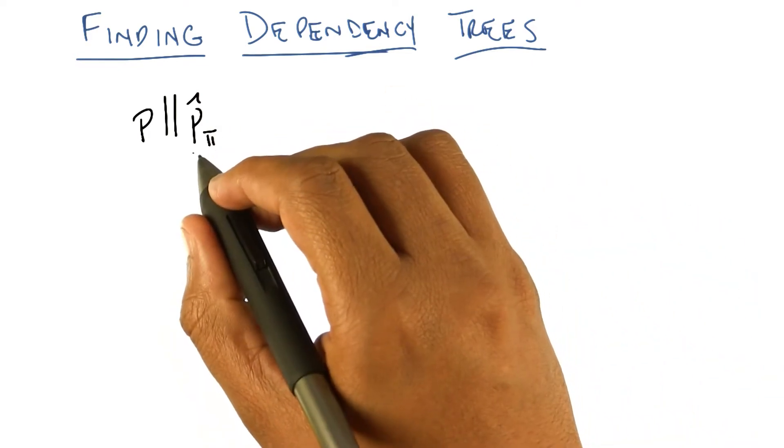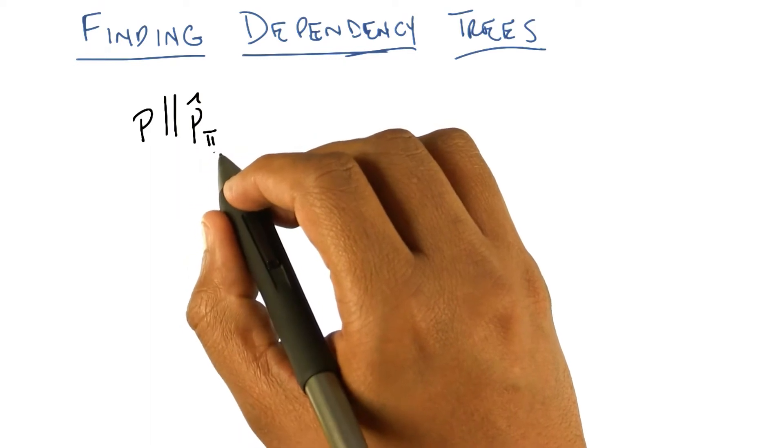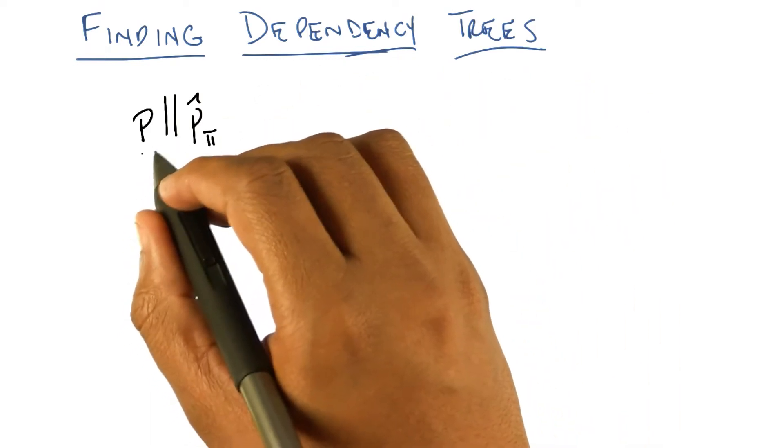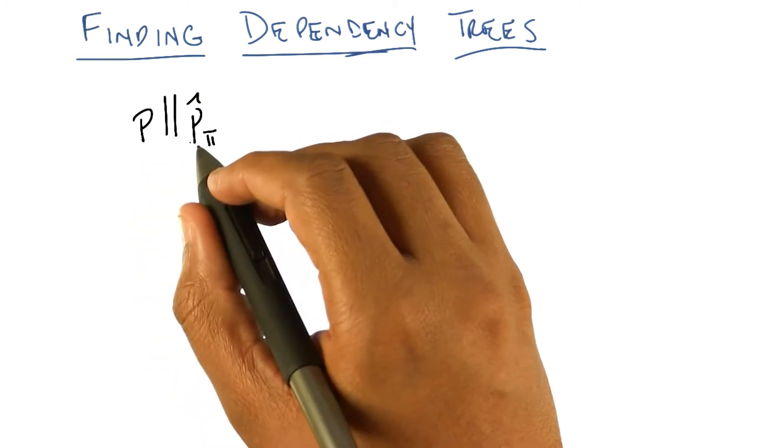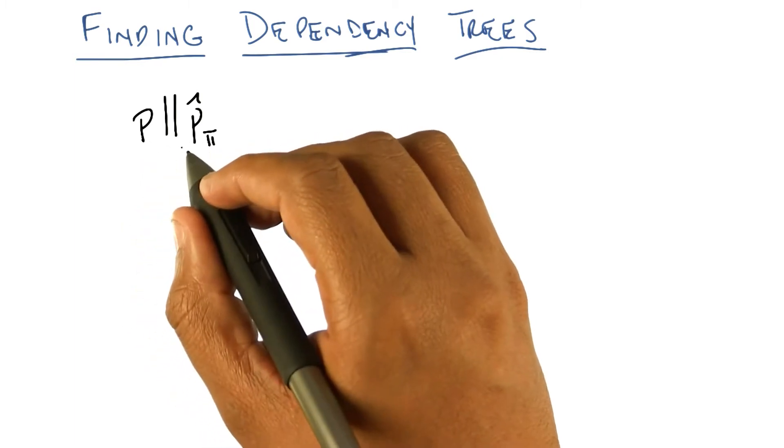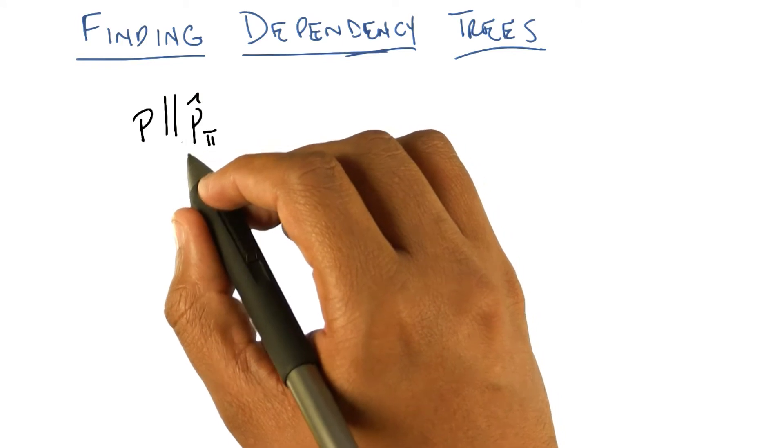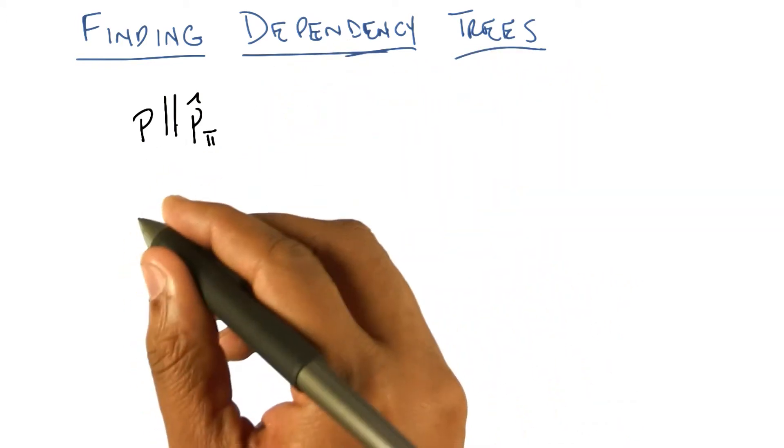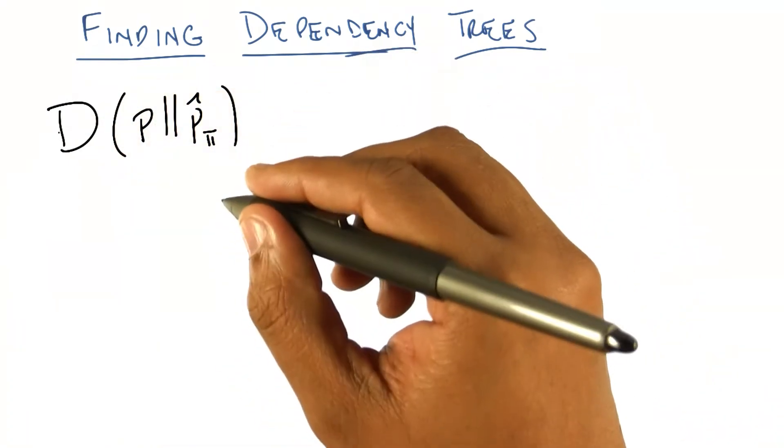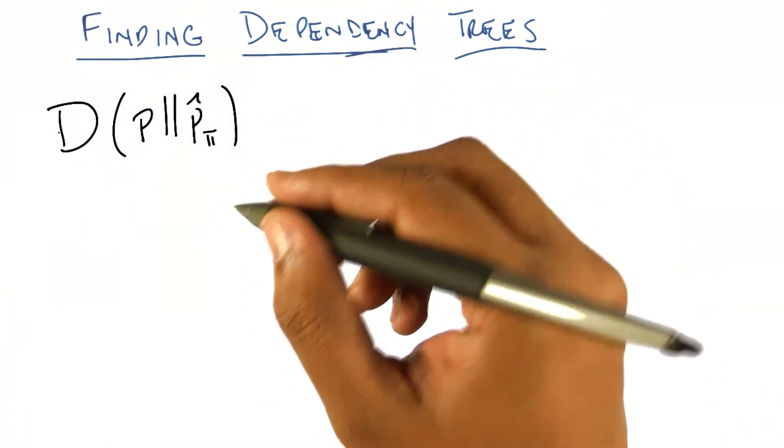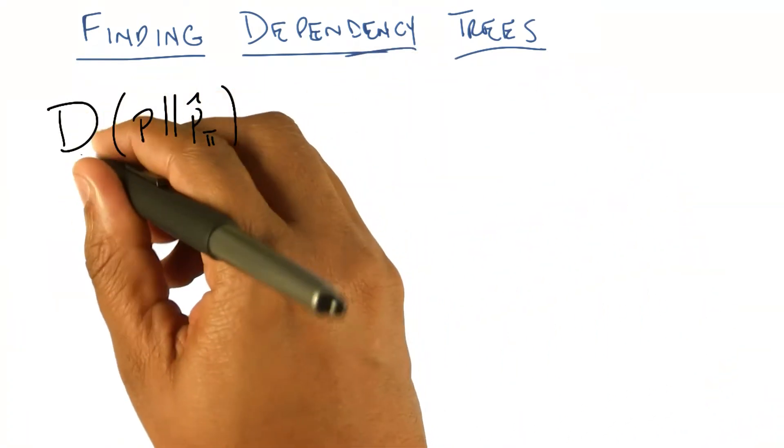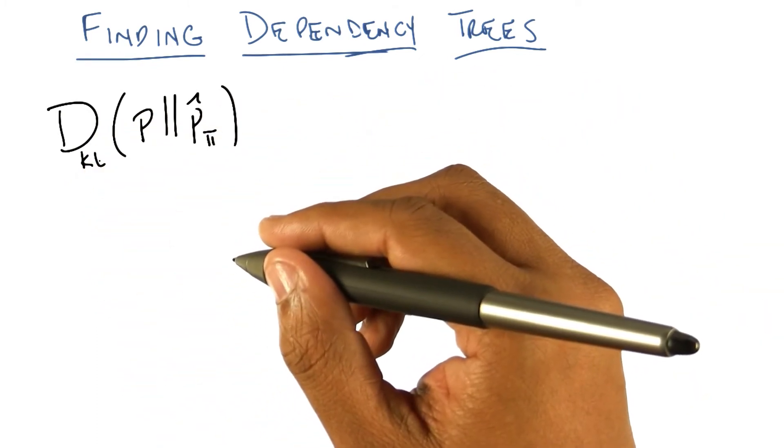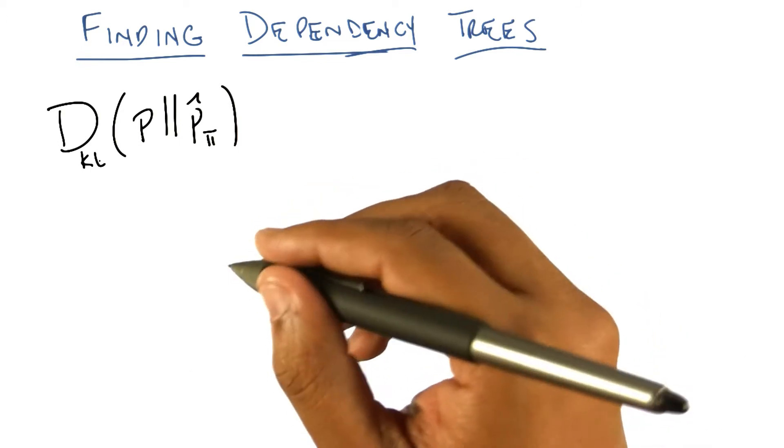So, somehow we want to not just find a P hat sub theta, that is a dependency tree that represents the underlying distribution, but we want to find the best one. And so, best one here sort of means closest one or most similar, or the one that would generate the points in the best possible way. And it turns out, for those of you who remember information theory, that there's actually a particular measure for that. And it's called the KL divergence. You remember what the KL divergence stands for, Michael? Kolbach-Libler. That's right.